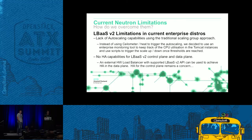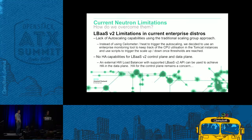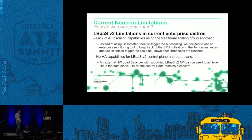How many of you have tried LBaaS using Ceilometer for scaling groups? In Heat, when you define scaling groups you can define thresholds — once you hit 80% CPU utilization for example, the scaling group kicks in, brings a new web server into the farm, adds it as a member of the load balancer, and everything should be fine. However, Ceilometer has quite a few known issues — there are instances where utilization is quite high and Ceilometer just didn't trigger the auto scaling group, and that happens very often.